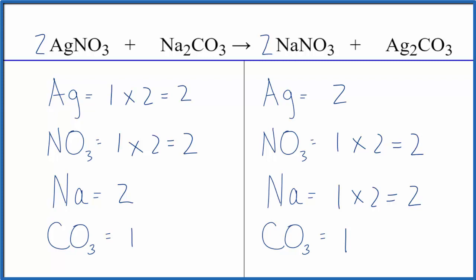This equation is balanced. So by counting these polyatomic ions here as just one item, one group, that makes the balancing a lot easier.